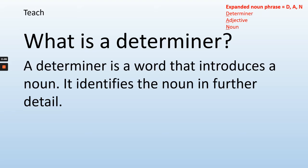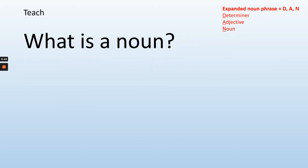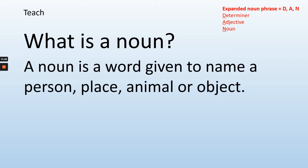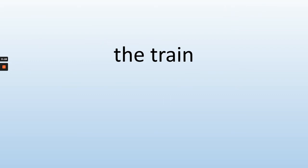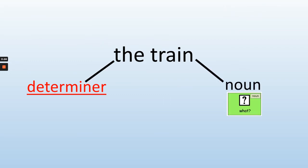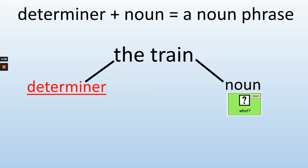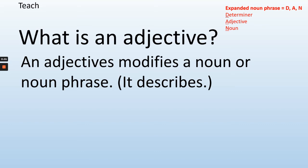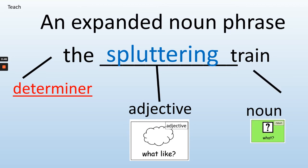So what is a determiner? A determiner is a word that introduces a noun and identifies it in further detail. What is a noun? A noun is a word given to name a person, place, animal or object. For example: the train — the is the determiner, train is the noun. That is a noun phrase. What is an adjective? An adjective modifies a noun or noun phrase, so it describes. We use adjectives to describe the noun: the hot sun, the blue ball, the cool water. It adds more detail and description to the noun. So an expanded noun phrase: the spluttering train — the is the determiner, spluttering is the adjective, train is the noun. Instead of just 'the train', we can imagine that train coming into the station spluttering out smoke.